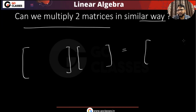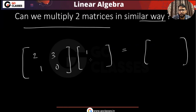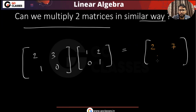The answer is yes. Let's see how. Suppose there is some matrix [2, 3; 1, 0] and another matrix [1, 2; 0, 1]. If I want to multiply these two matrices, this will be: 2 times 1 = 2; then 2 times 2 plus 3 times 1 = 7; then 1 times 1 = 1; then 1 times 2 plus 0 times 1 = 2. So the result is [2, 7; 1, 2].